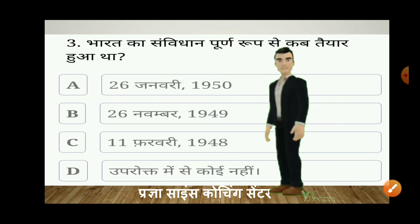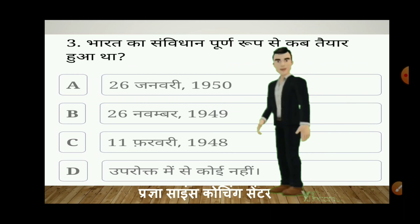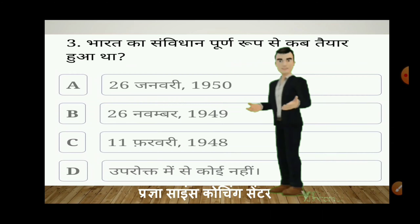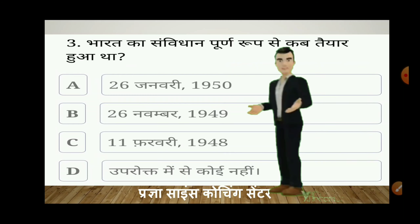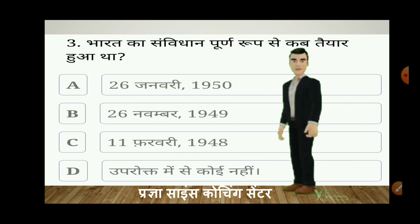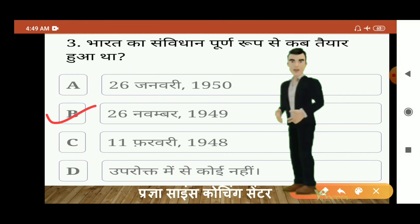अगला question है: भारत का संविधान पूरी तरह से कब तैयार हुआ? विकल्प हैं: 26 जनवरी 1949, 29 नवंबर 1949, 31 फरवरी 1949, उपरोक्त में से कोई नहीं। तो आपका उत्तर होगा B — 26 नवंबर 1949।